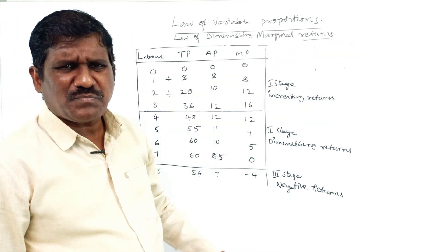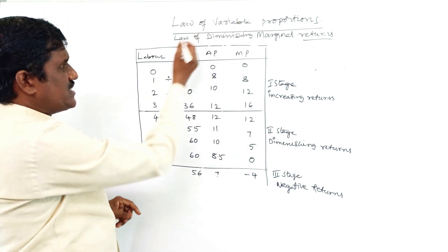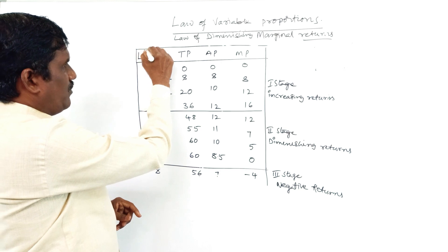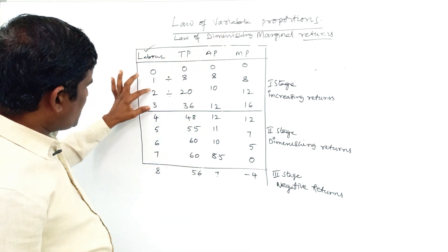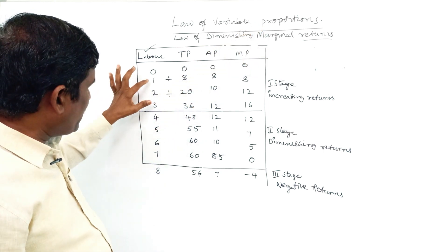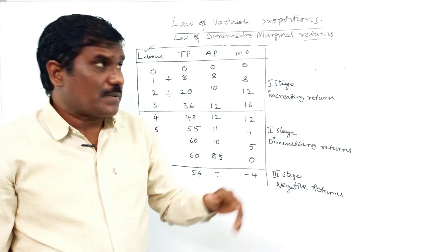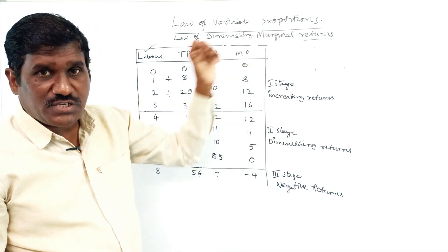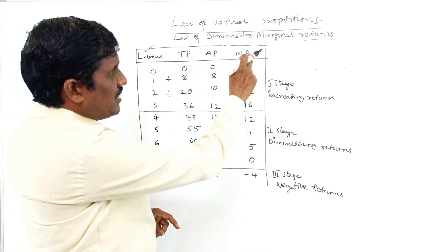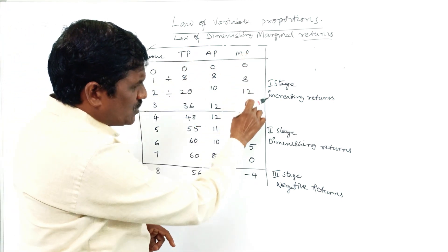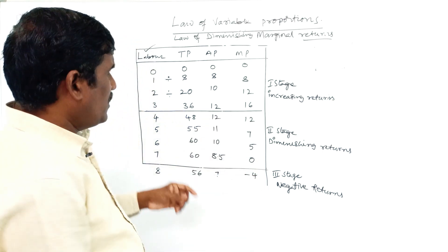In this video I am going to analyze the law of diminishing marginal returns, also called variable proportions. Variable means labor — it is a variable factor. We are changing the proportion; proportion means equal proportion of labor alone. The law of variable proportion and the second one is diminishing marginal production, which goes on diminishing — diminishing returns.